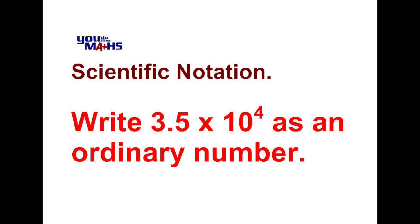In this video we have a look at how to express numbers which are written in scientific notation back to a form where they're just a normal whole number or sometimes referred to as an ordinary number. In this case it's 3.5 times 10 to the 4.